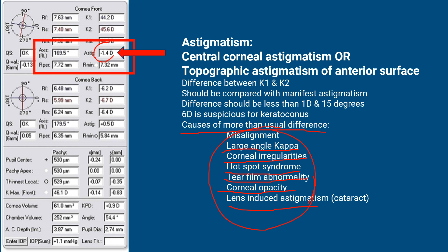Remember, 6 diopters of astigmatism is suspicious for keratoconus; anything less than 6 diopters is considered normal. Beyond 6 diopters, it becomes very suspicious.